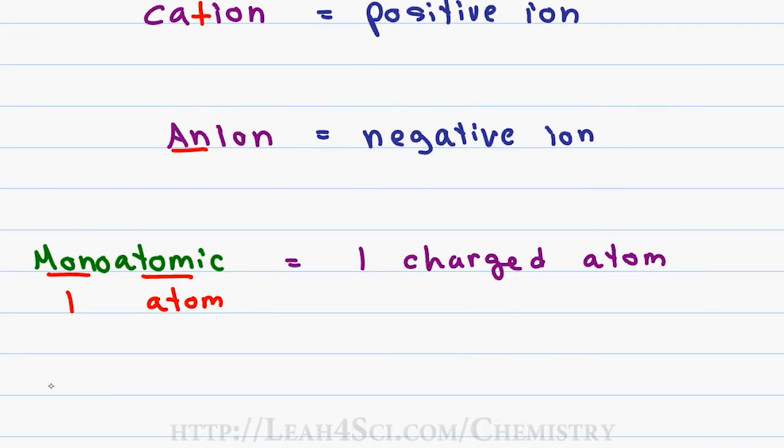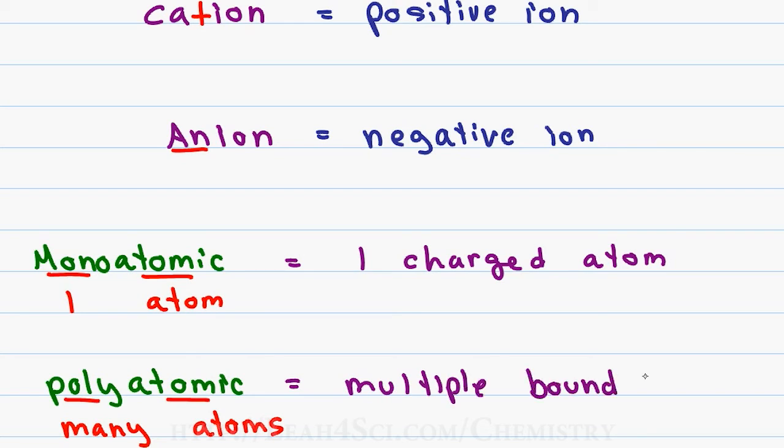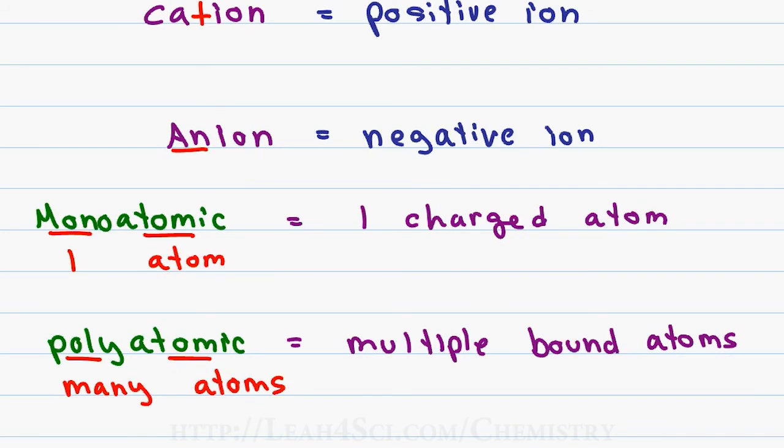The other type of ion is a polyatomic ion and this comes from the word poly which means many and again atom or elements. A polyatomic ion is simply a molecule made of atoms bound together but the entire molecule has gained or lost an electron and therefore has a charge. Some examples of polyatomic ions include hydronium which is H3O plus or acetate which can be written as CH3CO2 minus.